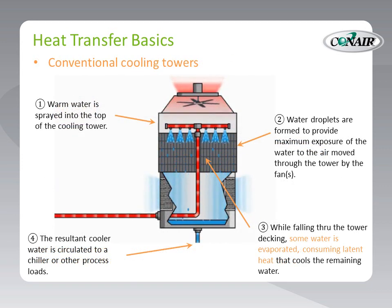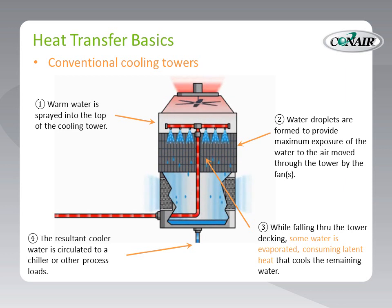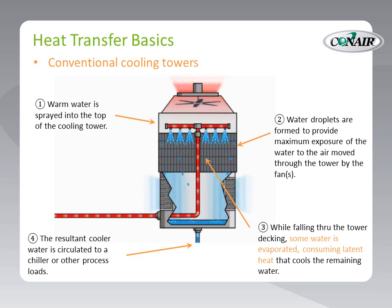Evaporative cooling towers take advantage of this to cool process water. As warm water is introduced into the top of the cooling tower, it falls in droplets through the tower decking. The cooling tower fan circulates air across those droplets, evaporating a portion of the water. The latent energy required for that evaporation cools the remaining water, which is collected at the bottom of the tower and is circulated to the process loads.